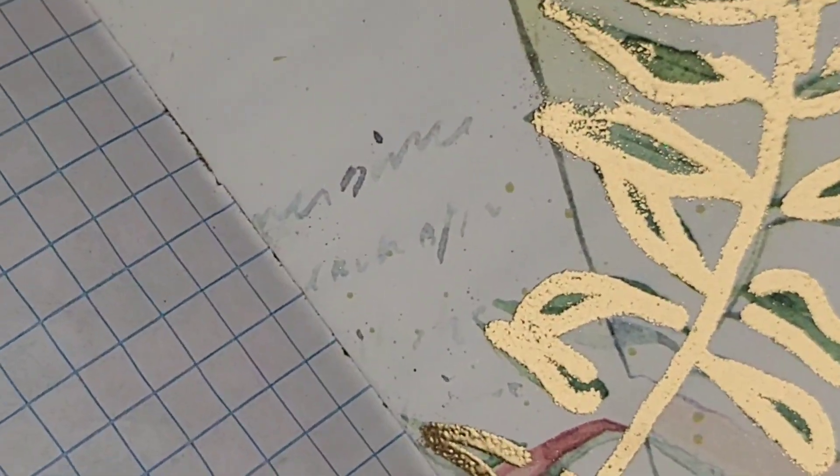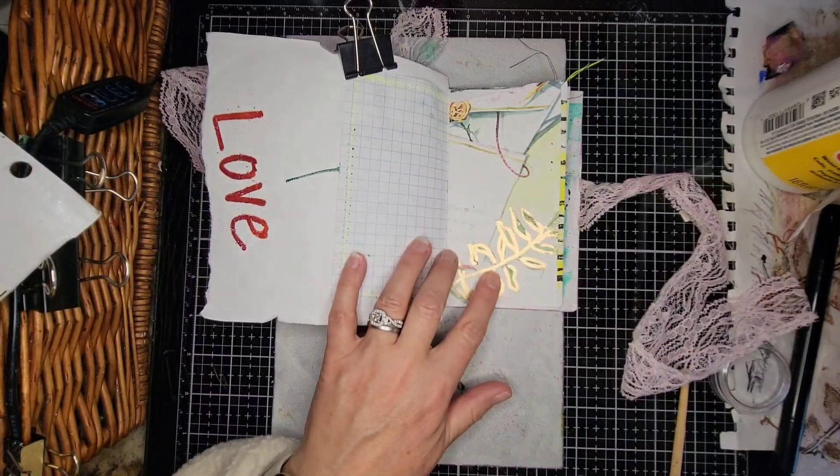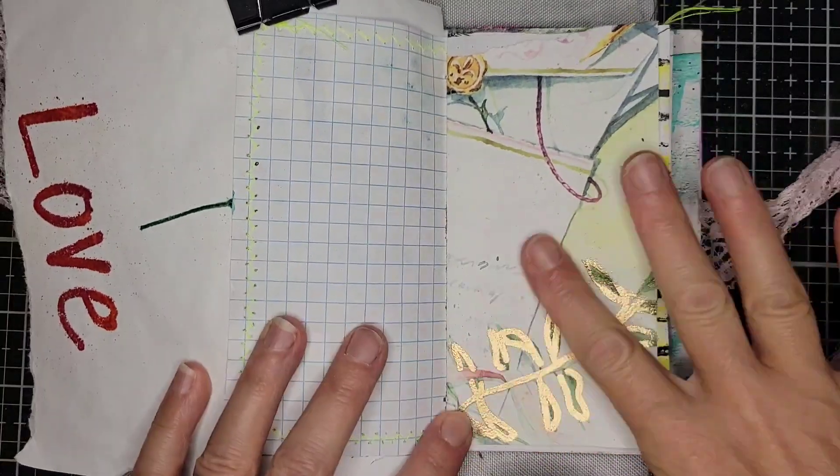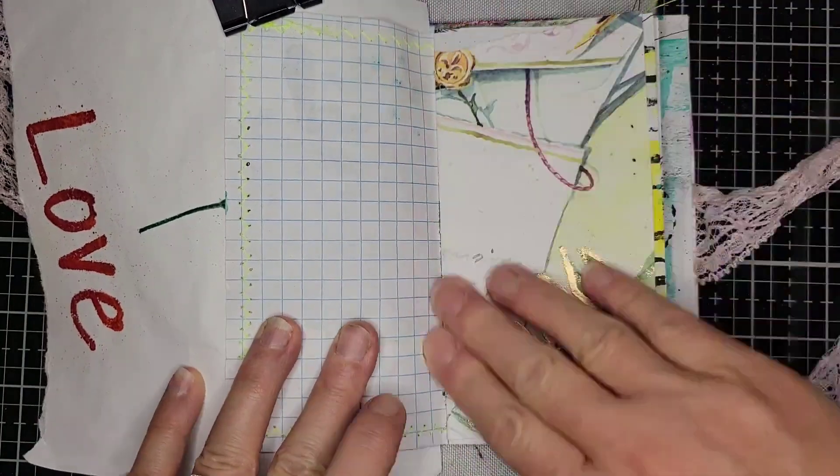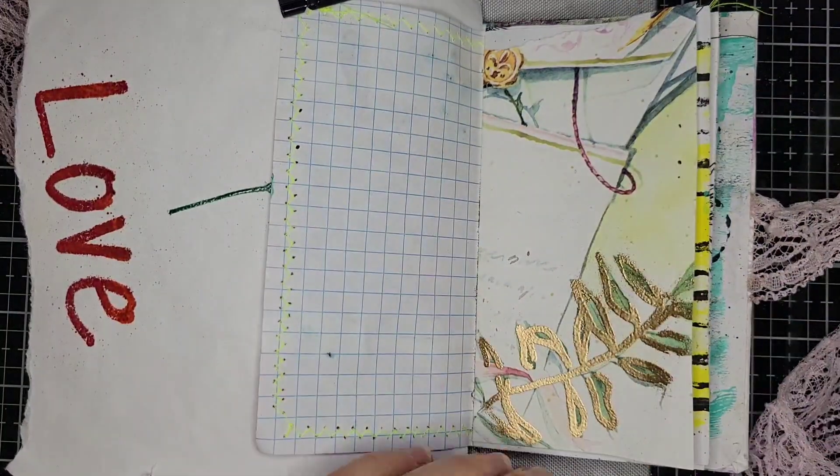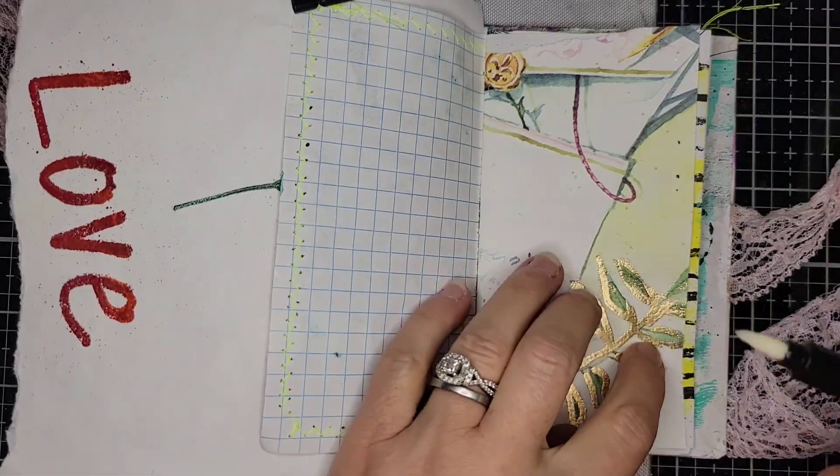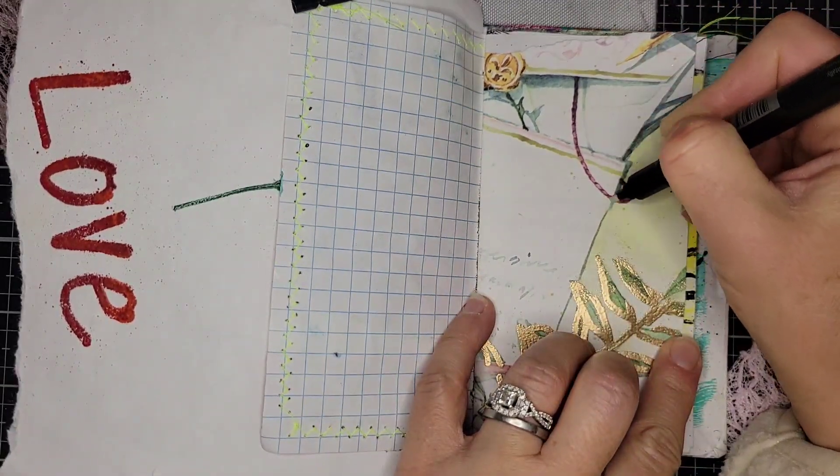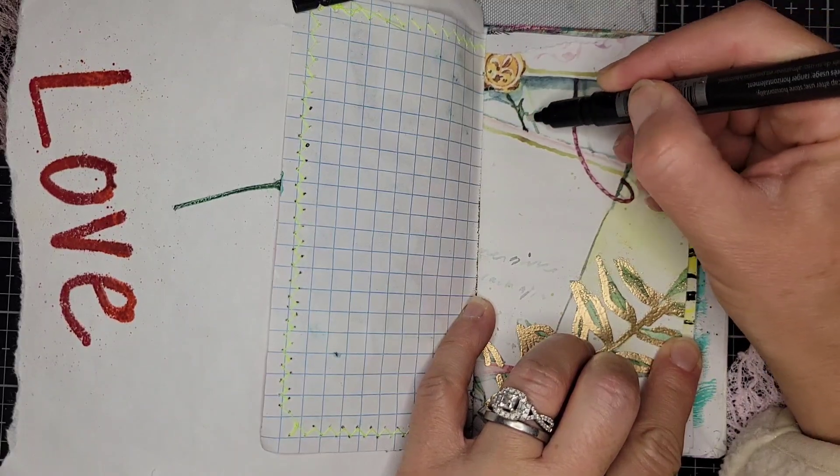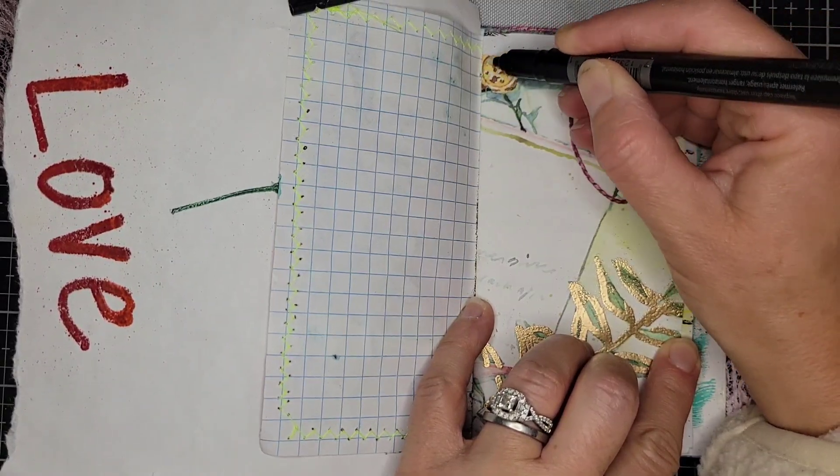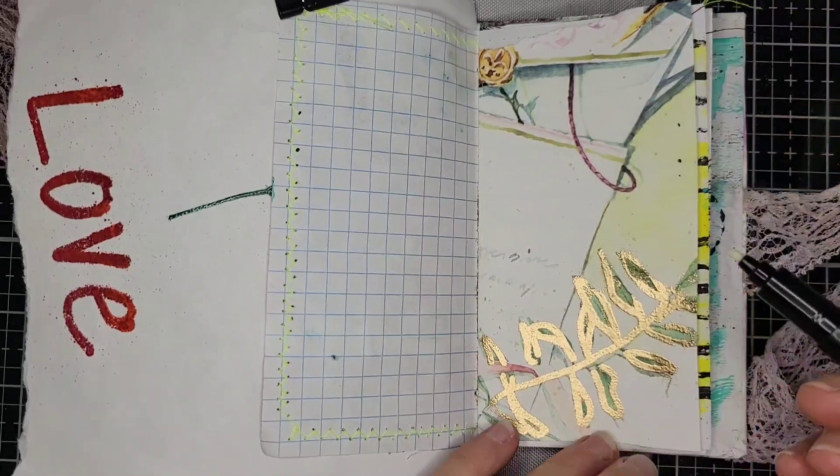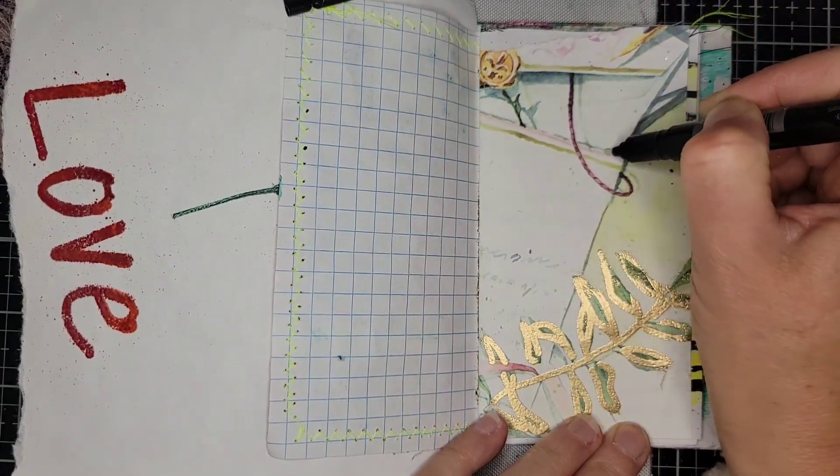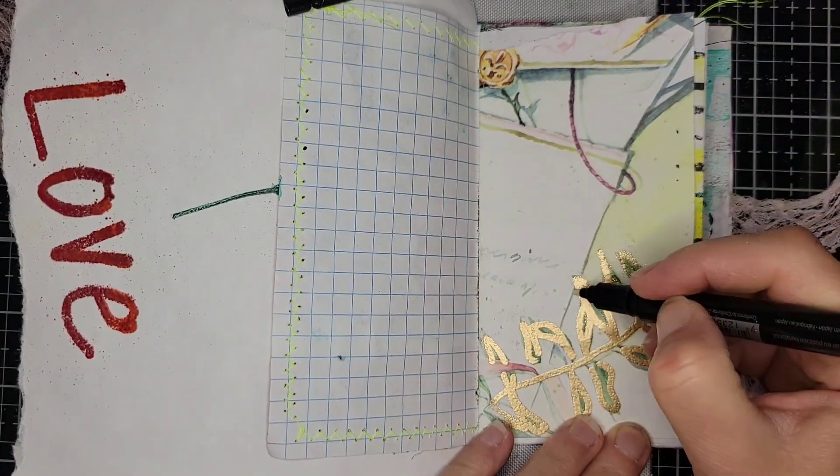So I did that and then kind of looked at it for a minute and decided what I was going to do next and I decided I wanted to add some more of that embossing powder to some of the other parts of that page on the right hand side.